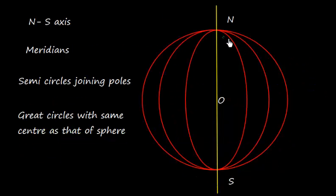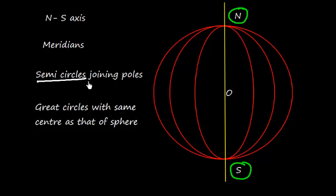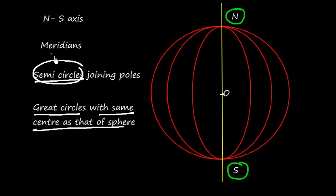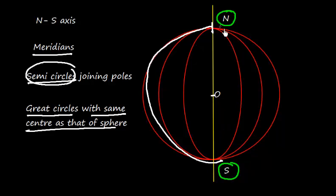Let us revise the basic concept. North and south are the two poles, and these are some semi-circles. These circles are actually great circles with the same center as that of the sphere. This is the big sphere and the center is O. The other circles are also having the same center, cutting this circle, and these semi-circles are meridians. One half of the circle makes one side of a meridian and the other half makes the other side.